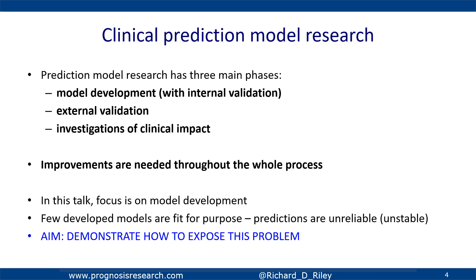Clinical prediction model research has three main phases. The first is model development — the architecture and process to produce the model equation or the black box of a machine learning approach. The next phase is usually external validation, where we test the performance of the model in new data often from different settings or countries. The third phase is looking at the performance of your prediction model in the context of changing clinical decisions and the impact on patient health outcomes. Today I'm just going to focus on the development phase.